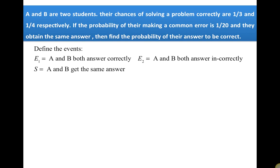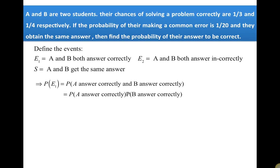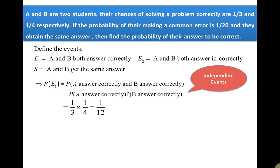The probability of E1 is the probability that A answers correctly and B answers correctly. Since A and B answering correctly are independent events, we multiply the two probabilities: P(E1) = 1/3 × 1/4 = 1/12.